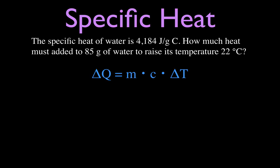Okay, so let's go through a few quick calculations. We have the specific heat of water is 4.184 joules per gram per degree Celsius. And how much heat must be added to 85 grams of water to raise the temperature 22 degrees Celsius.